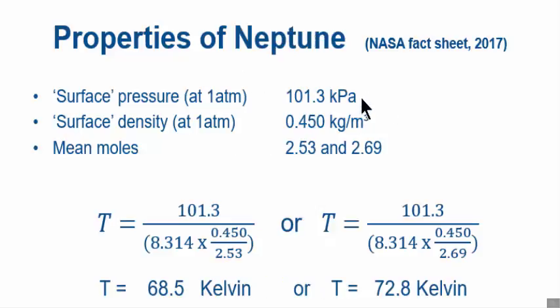Are these accurate? Neptune. Stick in the numbers. I don't know why, but NASA have given us two molecular weights for Neptune, so I've worked out both of them. Somewhere between 68 and 72 Kelvin. The temperature at one atmosphere in Neptune is actually 72 Kelvin, so it's exactly in between.